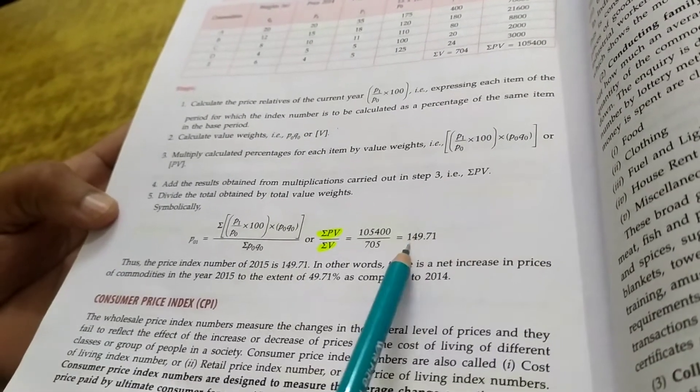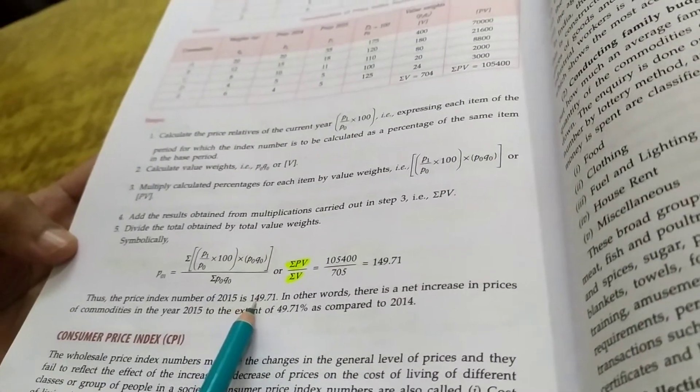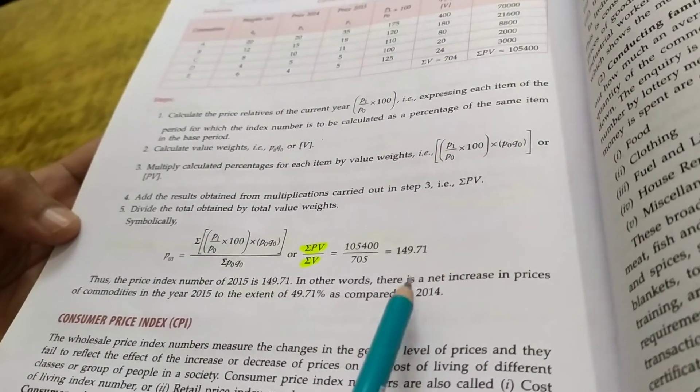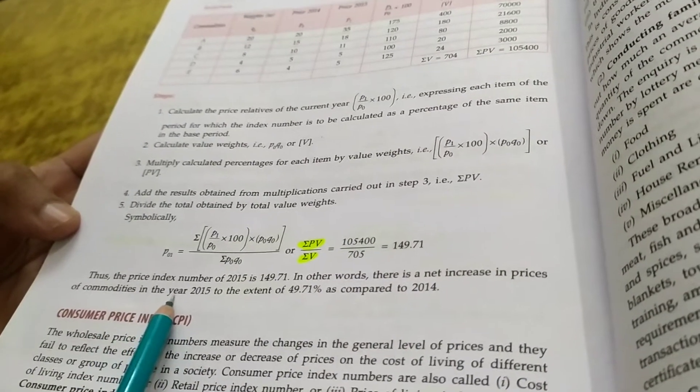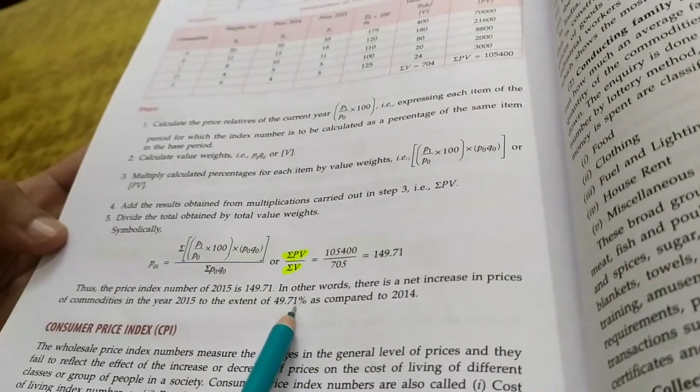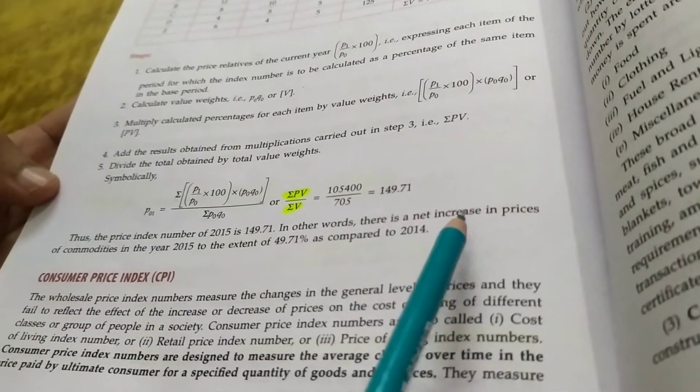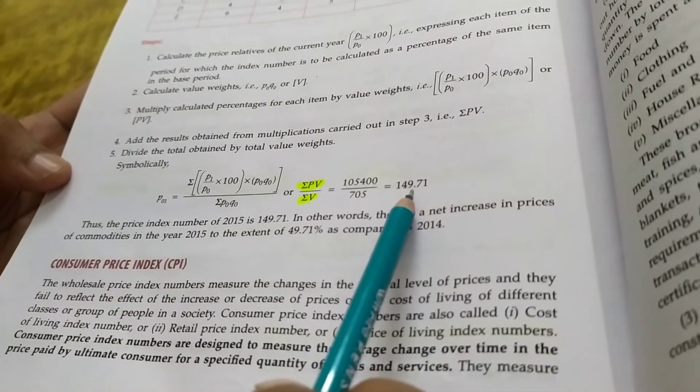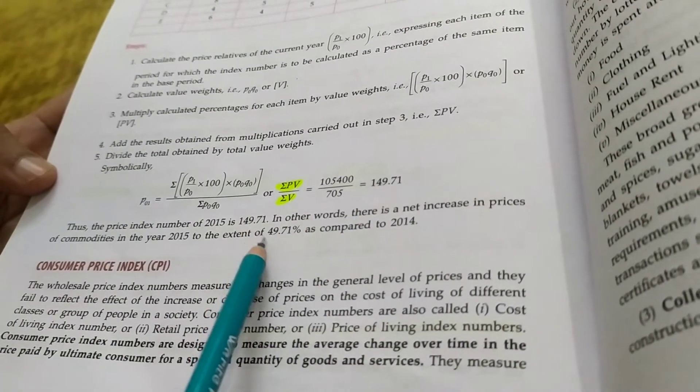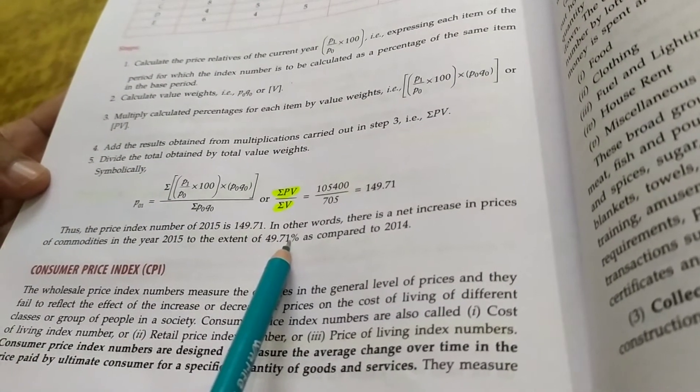Now how I will interpret it? Thus, the price index number of 2015 is 149.71. In other words, there is net increase in price of commodities in the year 2015 to the extent of 49.71% as compared to 2014. So in the base year the price was 100, and in 2015 the price increased by 149.71, that means the difference is 49.71. So dear students, this was the last question of index number.